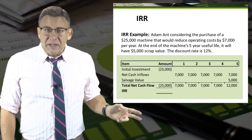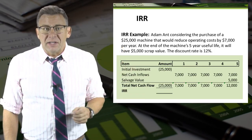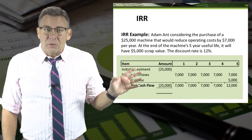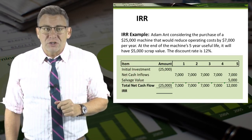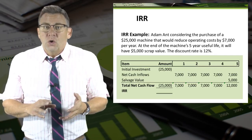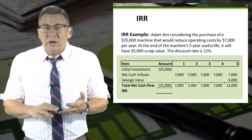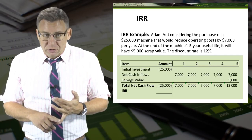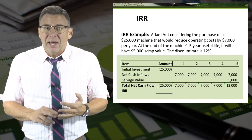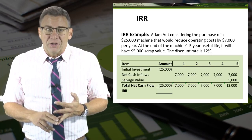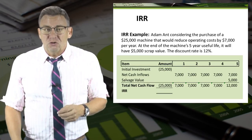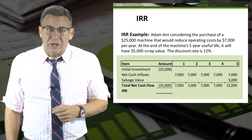I listed the items in the table and noted when their related cash flows occur. I also made sure to note which were cash inflows, like the savings in operating costs and the salvage value, and which were cash outflows, like the initial cost of the machine.